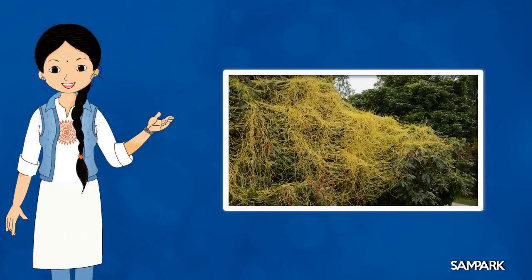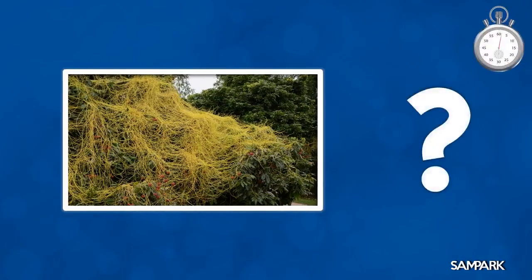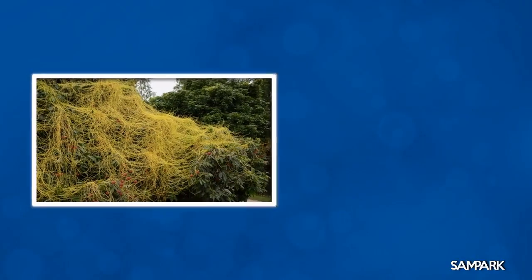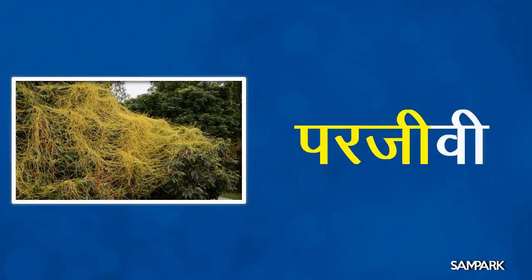बच्चों, अमर बेल किसी अन्य पौधे के ऊपर उग कर उस पौधे द्वारा बनाए गए भोजन से अपना भोजन प्राप्त करती है। तो ऐसे पौधों को क्या कहते हैं? इन्हें परजीवी कहते हैं। पर मतलब अन्य या दूसरा, जीवी यानी जीवनयापन करने वाला, तो परजीवी हुआ किसी दूसरे का बनाया भोजन प्राप्त करके जीवनयापन करने वाला।